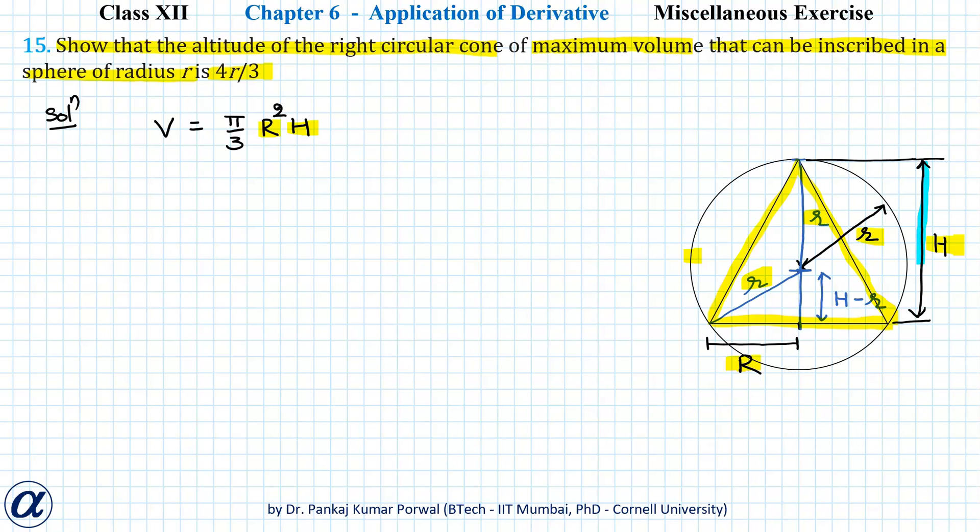In this problem the altitude of the cone is H and radius of the sphere is r, so this distance will be H - r, this distance is radius of the sphere, and this distance is radius of the base of the cone.